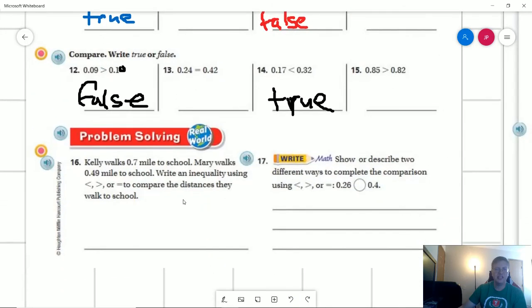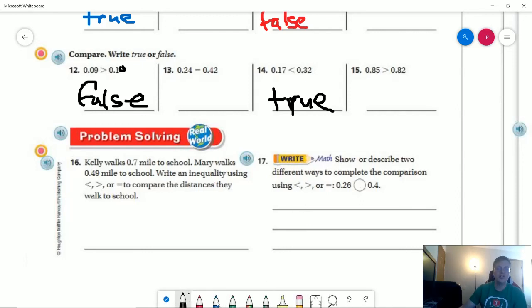Number sixteen: Kelly walks seven tenths of a mile to school, Mary walks forty-nine hundredths of a mile. Write an inequality. We can choose which one to put first—I'm going to use the order from the problem. Which one you put first will change which inequality symbol we use.